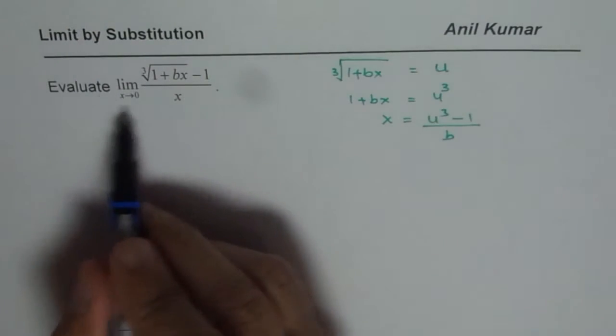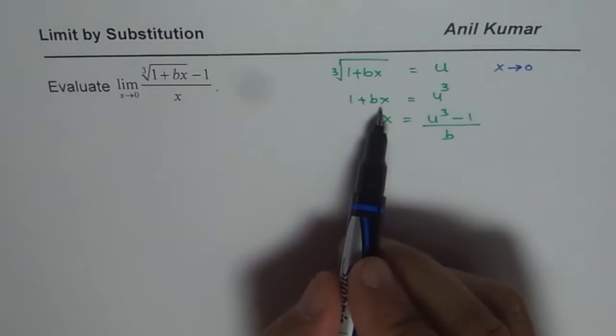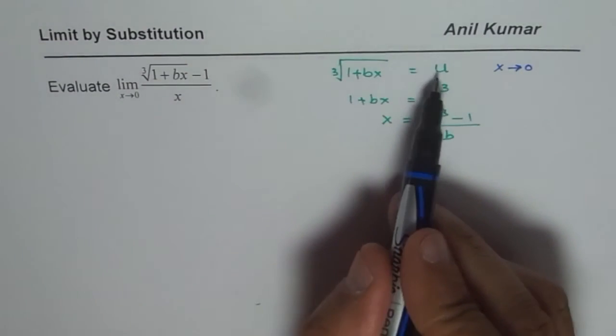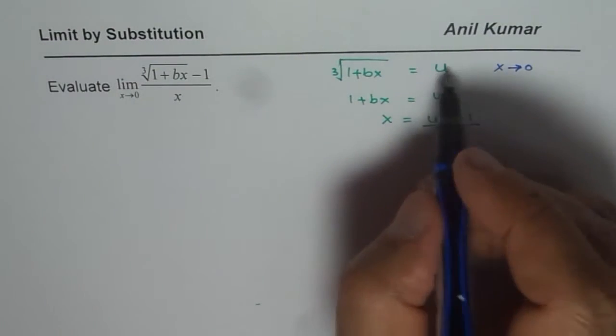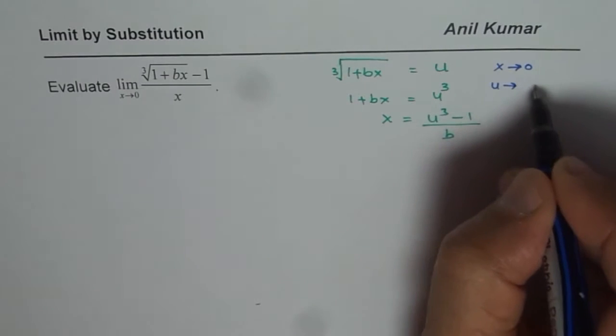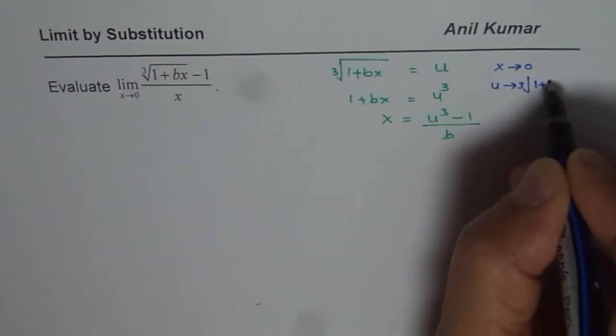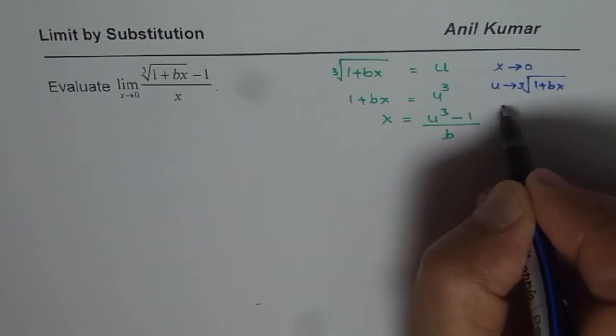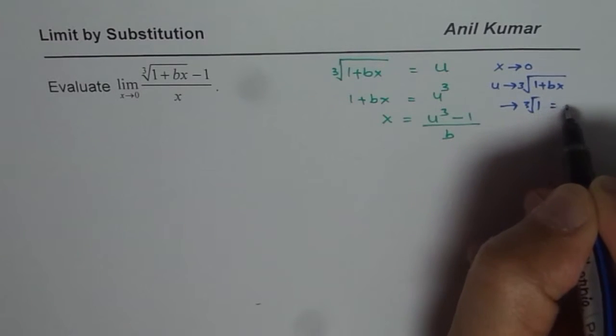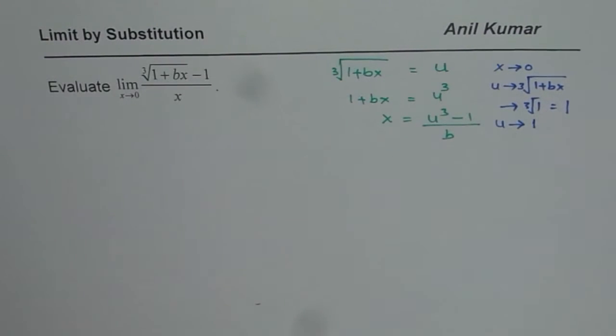The second part is consider the limit. Limit when x approaches 0. Now if x is approaching 0, what will u approach? That is what you have to figure out. So u is approaching cube root of 1 plus bx. Now as x approaches 0, it is approaching cube root of 1 which is 1. So we find that u approaches 1.